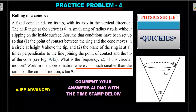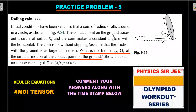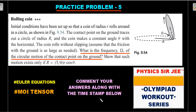Practice problem five — the rolling coin question — is the real tough one, beyond JEE Advanced level. This time the radius of the object is not small, and there is a condition for the motion to exist. Try to find the frequency and comment below. Only students well versed with Euler equations and the moment of inertia tensor can answer this. Pure JEE aspirants can stay away, but I'll take this up in the Olympiad Workout Series once the JEE Advanced exam is over.